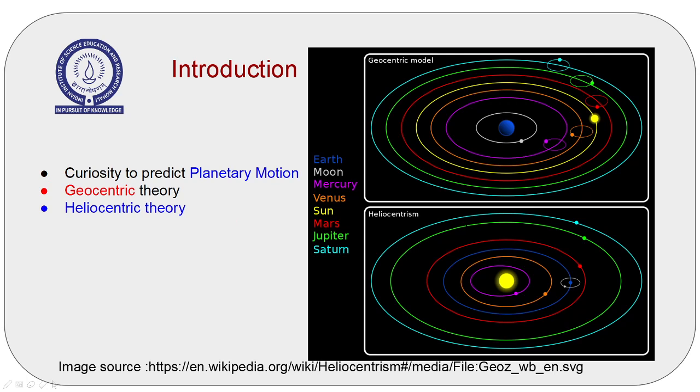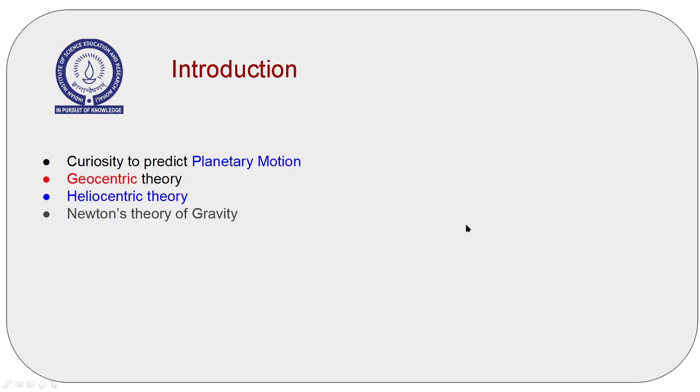At the same time, Kepler published a series of laws to describe the planetary motion around the Sun. Building on Kepler's laws, Newton explained the concept of gravity, which can be said that F is equal to GM₁M₂ upon r squared.